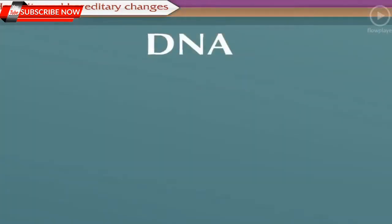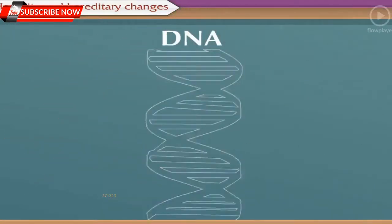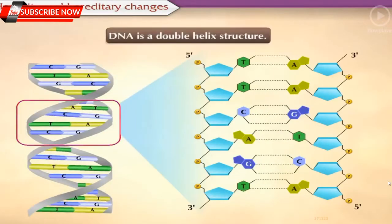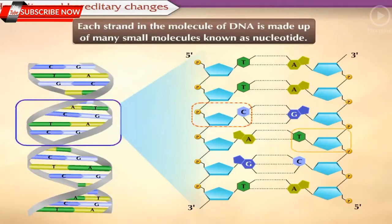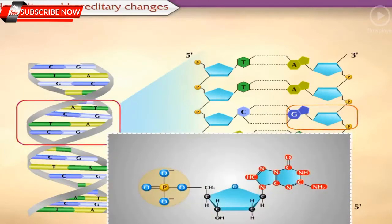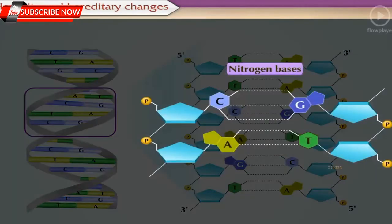Let us draw the structure of a DNA. DNA stands for deoxyribonucleic acid. It is a double helix structure. Each strand in the molecule of DNA is made up of many small molecules known as nucleotides. A nucleotide is made up of three main components: deoxyribose sugar, phosphate group, and nitrogen base. Nitrogen bases are of four types: Adenine, Guanine, Cytosine and Thymine.